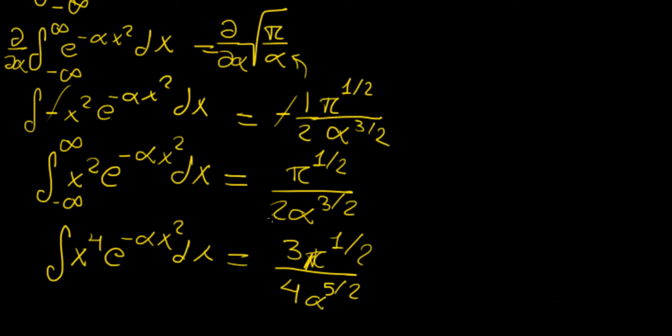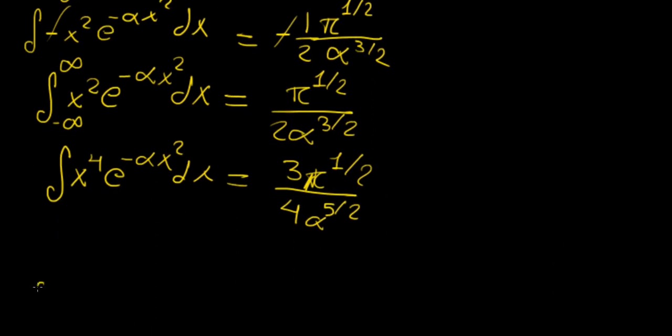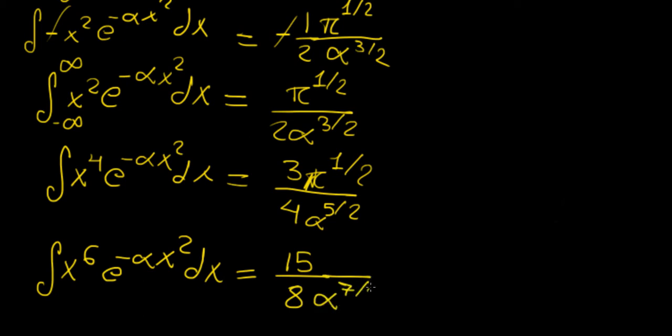And we can essentially keep going with this, so you can hopefully see that a pattern begins to emerge for all these different expressions. If we differentiate this again, we're going to get the following, so we're going to get 5 times 3, that's 15, and then over 8, alpha 7 on 2, and pi remains the same all through. So we are just evaluating these things just by differentiating with respect to that parameter alpha.